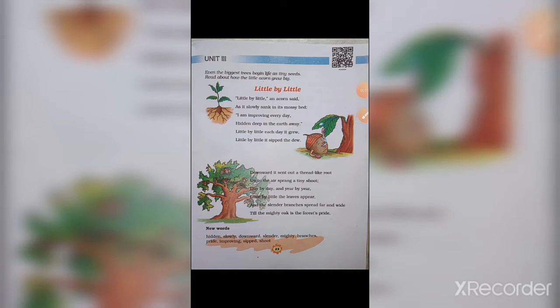First we will see the name of the poem, which is 'Little by Little' — meaning dhire dhire. 'Little by little, an acorn said as it slowly sank in its mossy bed.' In the first two lines, an acorn said that little by little it slowly sank — slowly sank means it slowly went down — in its mossy bed, meaning a very mossy, lush place.